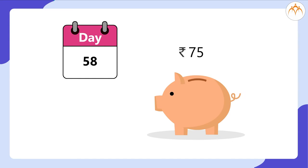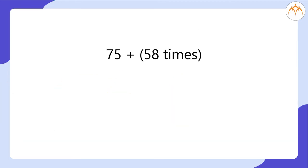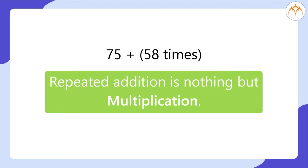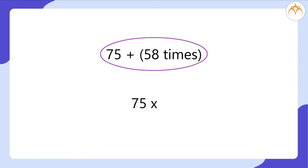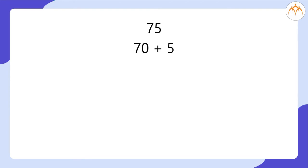Now, if I deposit 75 rupees every day for 58 days, I will have to add 75 fifty-eight times, right? Will that be an easy and quick task? No, certainly not. In mathematics, we have a quicker method to do this. Repeated addition is nothing but multiplication. So instead of adding 75 fifty-eight times, I can multiply 75 by 58, or I can multiply 58 by 75. I will get the same answer, right?